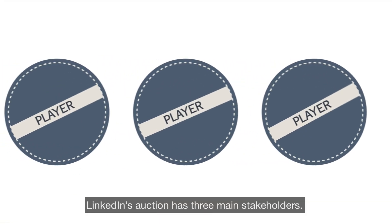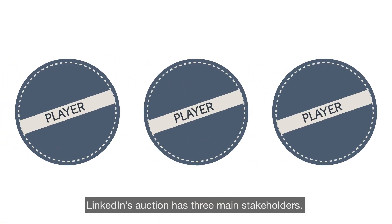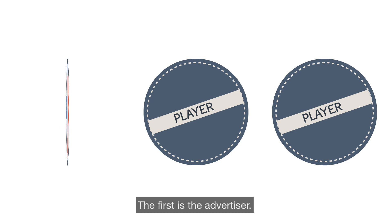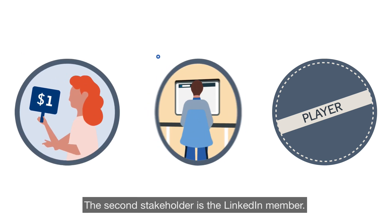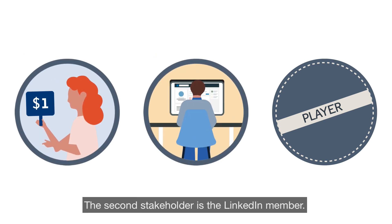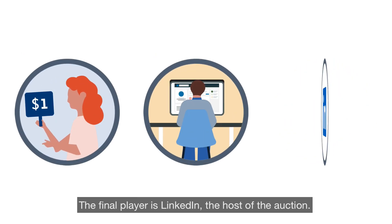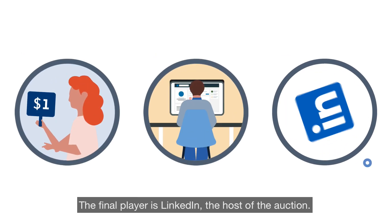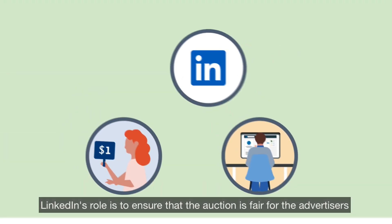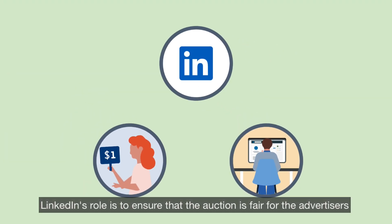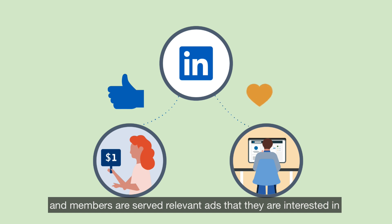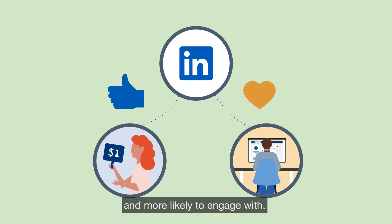The players. LinkedIn's auction has three main stakeholders. The first is the advertiser. The second stakeholder is the LinkedIn member. The final player is LinkedIn, the host of the auction. LinkedIn's role is to ensure that the auction is fair for the advertisers, and members are served relevant ads that they are interested in and more likely to engage with.